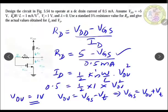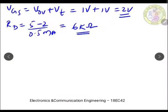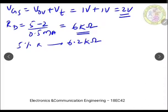The problem requires using a standard 5% resistance value for Rd. From the standard resistor table, the nearest 5% standard value is 6.2 kΩ. So we replace the calculated 6 kΩ with 6.2 kΩ.